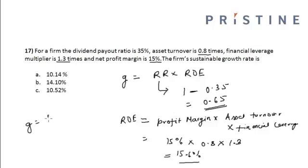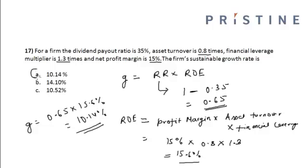The sustainable growth rate is the retention rate of 0.65 multiplied by ROE of 15.6%, which equals 10.14%. Hence, option A is correct: the sustainable growth rate is 10.14%.